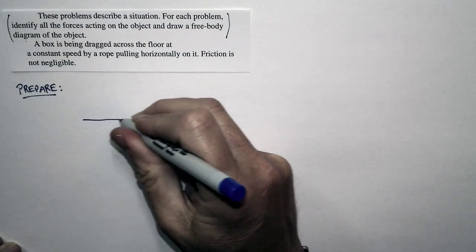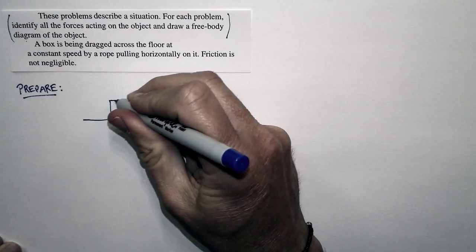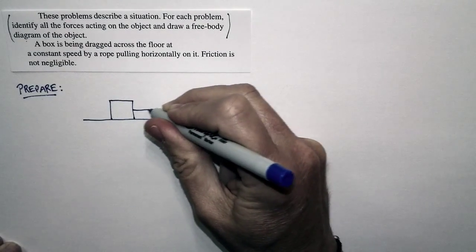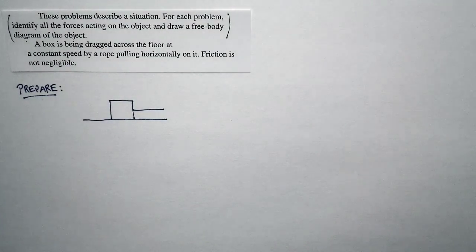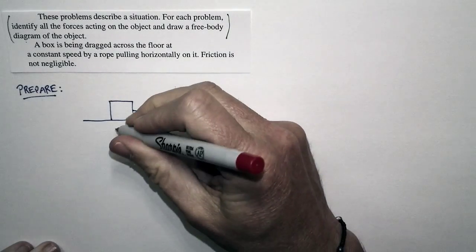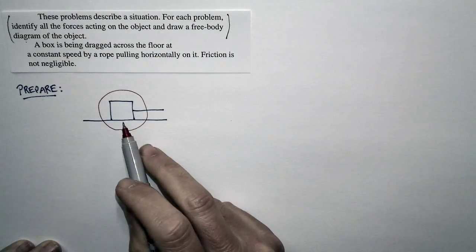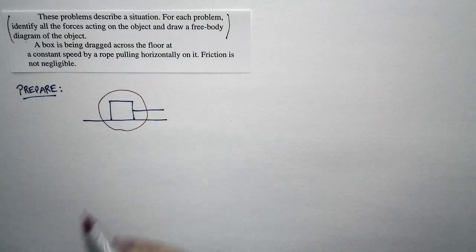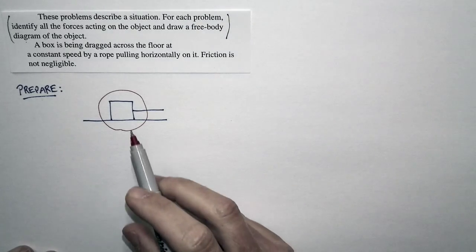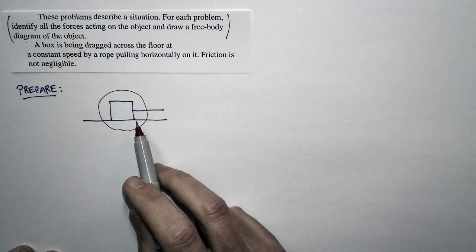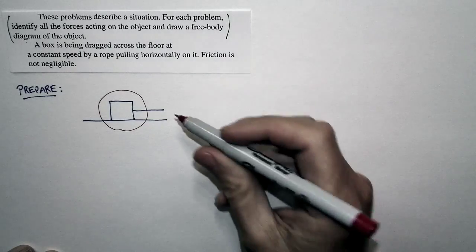So here's our situation. There's a box on the floor, and it's being pulled horizontally by a rope attached to it. Now here's the thing. We're going to take this box and draw a circle around it. And so we're going to imagine this box in isolation from everything else in the world. What is it that touches the box? Well, there's two things. There's the floor, and then there's the rope.